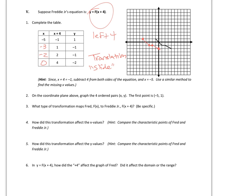That type of slide is formally called a translation. Since I affected the x-values here, I'm affecting the domain. Moving left 4 units means I subtracted 4 from all x-values. The domain, which used to go from negative 1 to positive 4, now goes from negative 5 to 0. Since I didn't affect the y-values, the range stayed the same — from negative 2 up to positive 1.